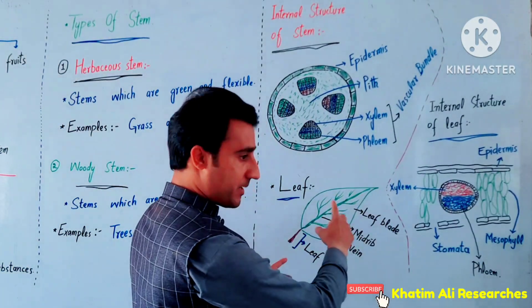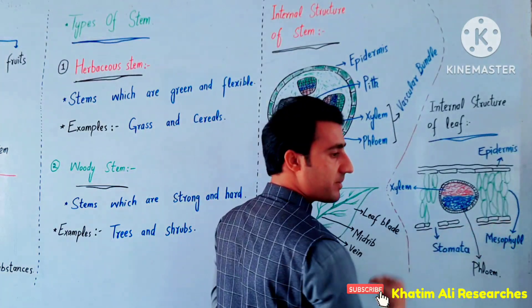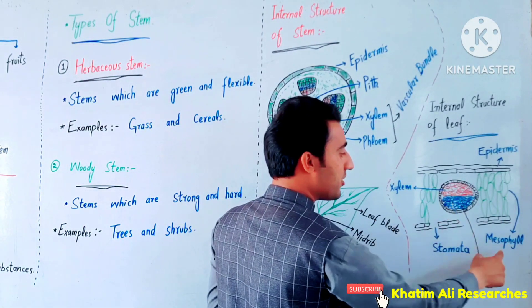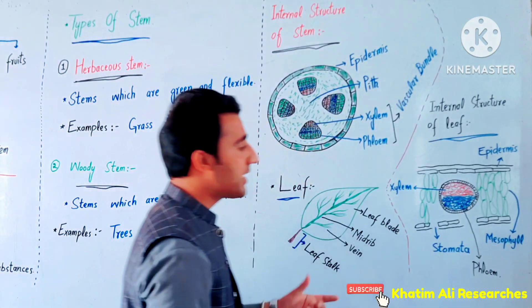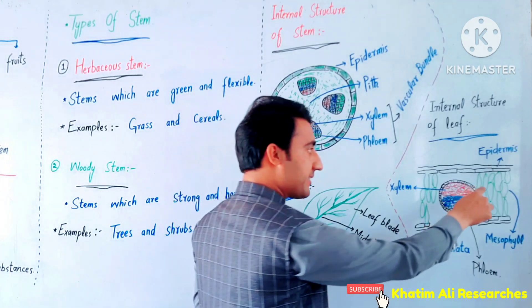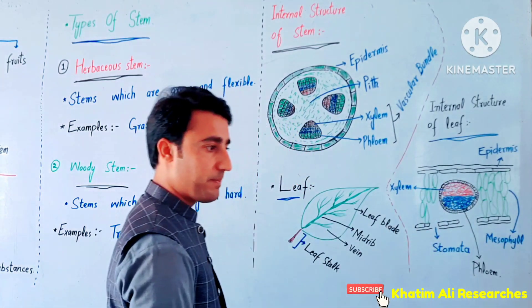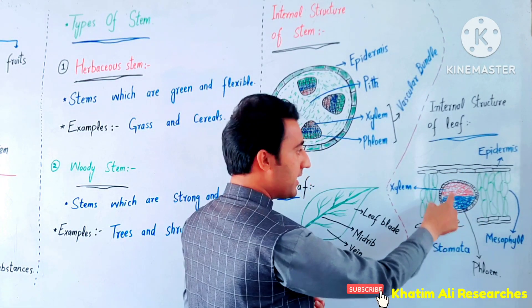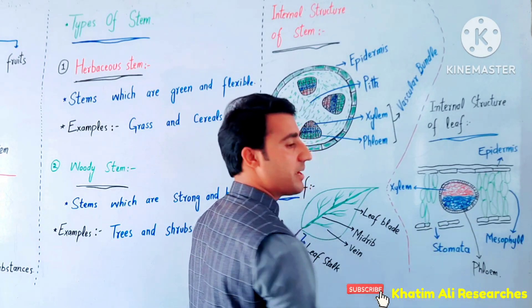Now the internal structure of the leaf. The outermost layer is the epidermis. Inside are different cells — it is the mesophyll. If there is chlorophyll in the mesophyll cells, the plant is ready for photosynthesis. In the vascular bundle, the xylem and phloem are present.